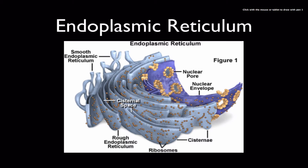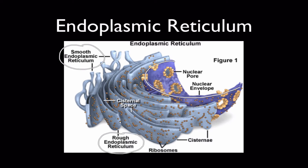The endoplasmic reticulum is a very large set of folded membranes that are usually associated with the nucleus. Here in purple is the nucleus, and folded around it like a sheet is the endoplasmic reticulum. The ER has basically two forms: the smooth kind and the rough kind, and you can tell them apart by whether or not there are ribosomes attached. The ER is a hollow space separated from the cytosol, called the cisternal space.